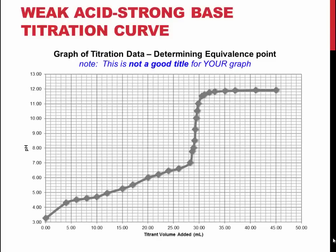In this experiment, you will be titrating a weak acid with a strong base. An example of what the titration curve from your experiment will look like is shown on the slide. Notice the almost linear region at the bottom of the curve. This is the buffer region. You will be looking at this in greater depth next week.